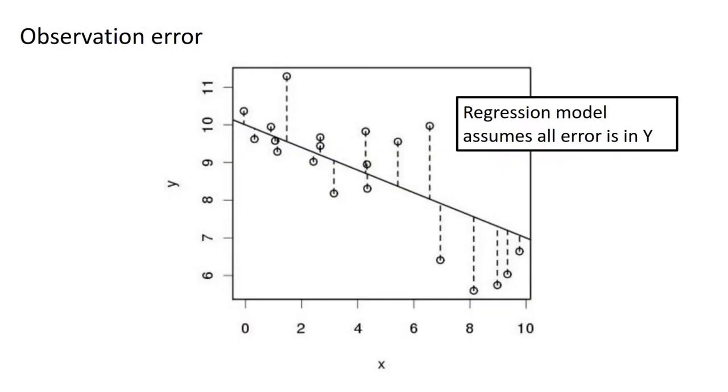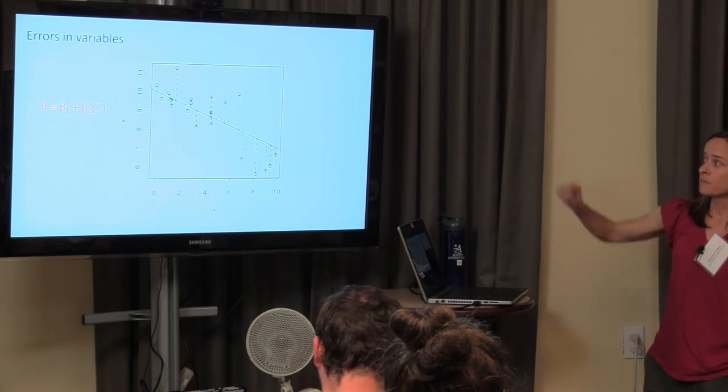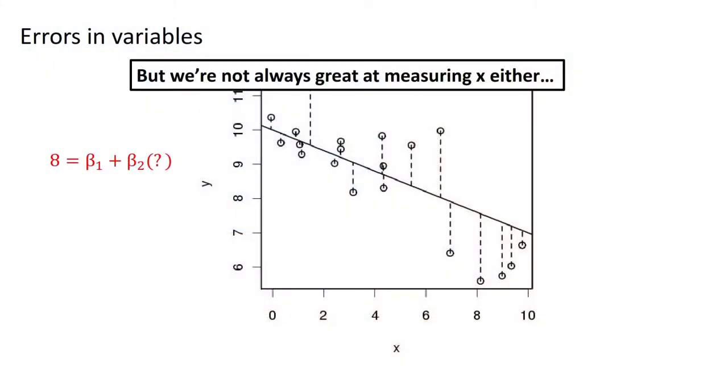Another class of assumptions is observation error. The regression model assumes all error is in the Y's. You figure out the best fit line and calculate residuals by looking at the difference between your observation and the line. There's always uncertainty associated with the parameters you estimate. You can make that uncertainty smaller by collecting more observations, but the noise that's left is always assumed to be in Y. But sometimes you actually also don't measure X very well, so there's error in our predictor variables.